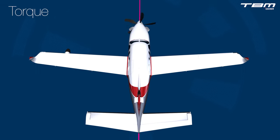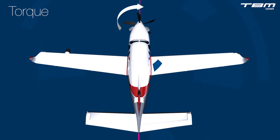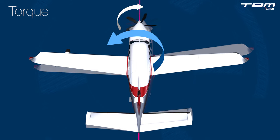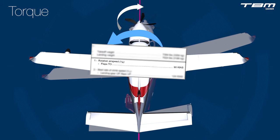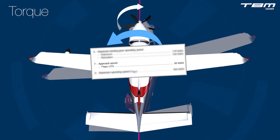Torque influences roll about the longitudinal axis — a counterclockwise rotation of the fuselage when viewed from the cockpit. It is also predominant at low airspeeds. Respecting rotation speed and minimum approach speed provides control authority against the effects of torque.